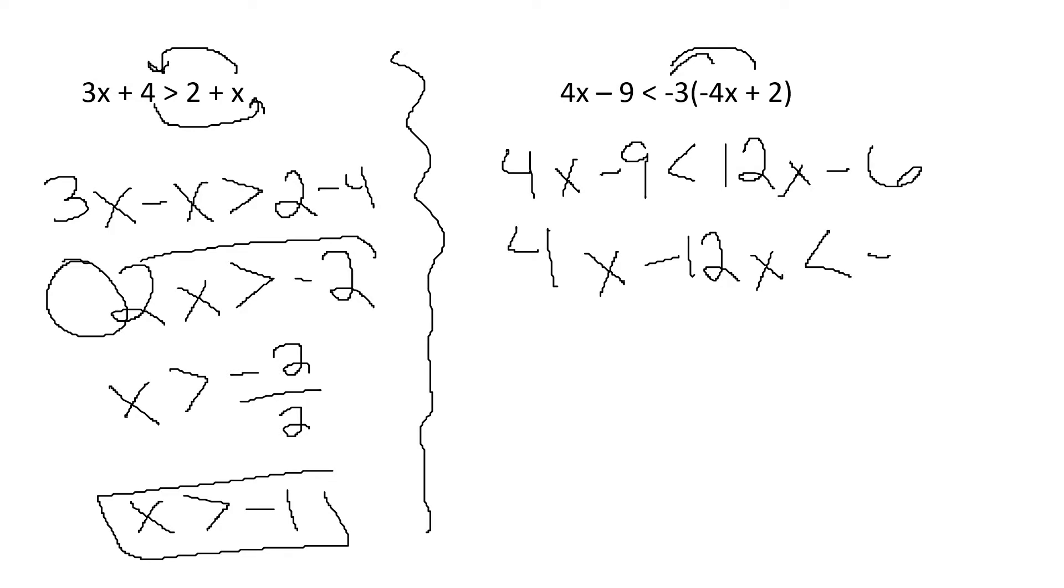Negative 6, keep your sign with that. My minus 9 is going to become plus 9 when I move it over. 4x minus 12x is negative 8x. Negative 6 plus 9 is 3.